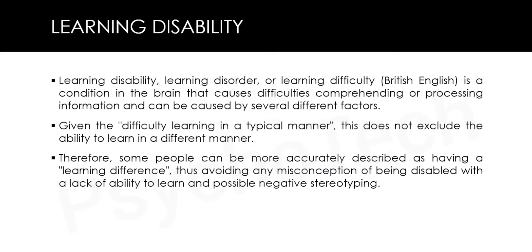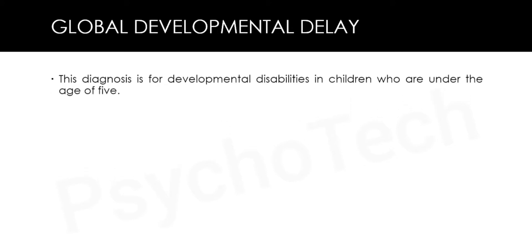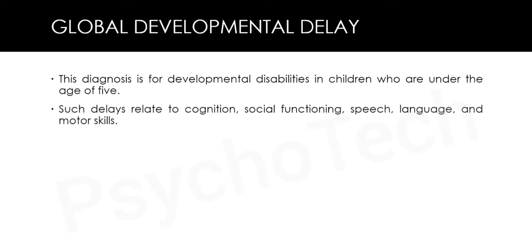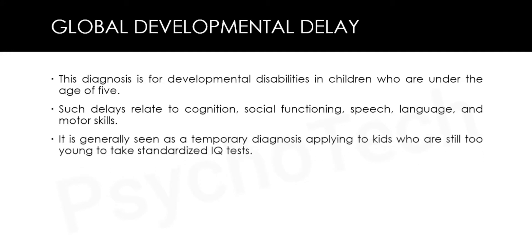In the United Kingdom, the term learning disability generally refers to an intellectual disability, while difficulties such as dyslexia and dyspraxia are usually referred to as learning difficulties. The next type is global developmental delay, a diagnosis for developmental disabilities in children under the age of five, related to cognition, social functioning, speech, language and motor skills. It is generally seen as a temporary diagnosis for kids still too young to take standardized IQ tests.